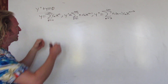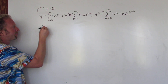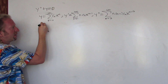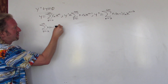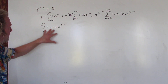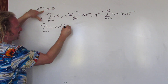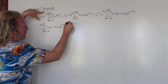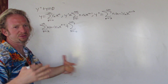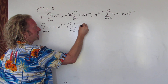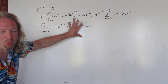Now we're going to plug into our DE. So we have y double prime — that's the infinite sum from n equals 2 to infinity of n times n minus 1 times c sub n times x to the n minus 2. Plus the infinite sum for y: c sub n times x to the n, and that's equal to 0.